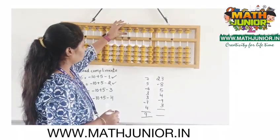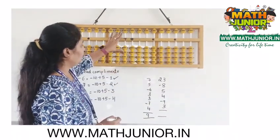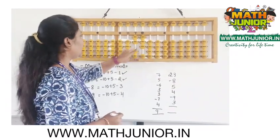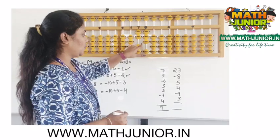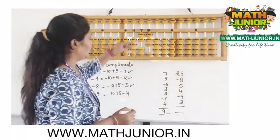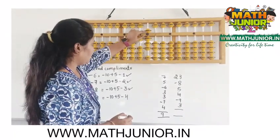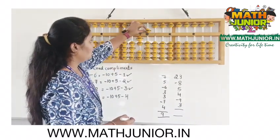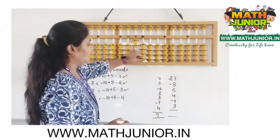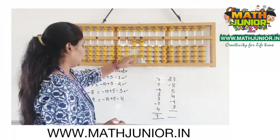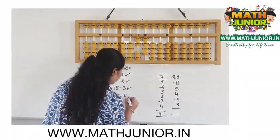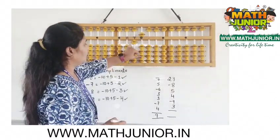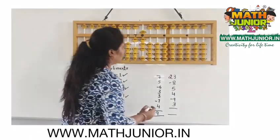The next example is: add 23. 20 directly and 3 directly. Then minus 8 — we cannot remove 8 directly, and with the help of tens complement it is also not possible. We use the formula: minus 8 equals minus 10 plus 5 and minus 3. Then add 5 is add 10 and minus 5. Then add 4 — we can add 4 directly. Then minus 9 — we cannot remove 9 directly, so we use the formula: minus 10 plus 5 and minus 4. Then add 3 directly. So the final answer is 18.